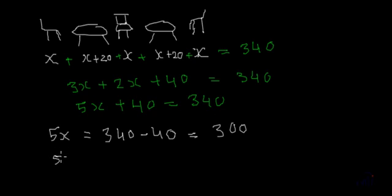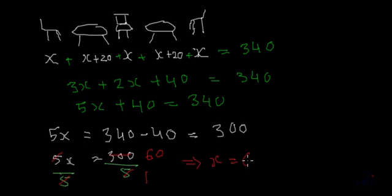So 5x is equal to 300. If we divide both the sides by 5, this 5 and this 5 will get cancelled. And here we will have 5 ones of 5, 5 6 of 30, and 0. So from here we got x is equal to 60.